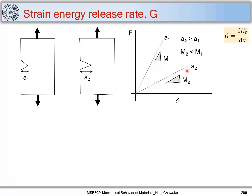Let the slope of F versus delta be M1 for crack length A1 and M2 for crack length A2. When A2 is greater than A1, M2 is less than M1 — the slope is smaller when the crack length is larger. We can write F = M·delta, where M is the stiffness of the material, analogous to a spring constant.